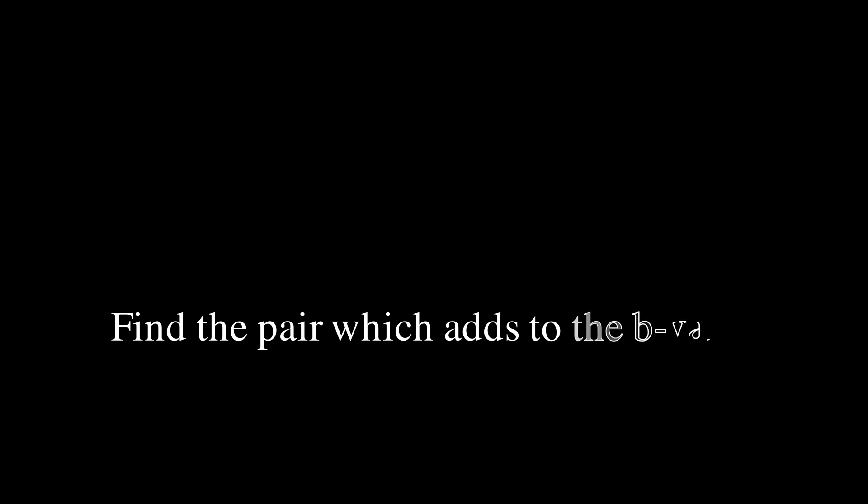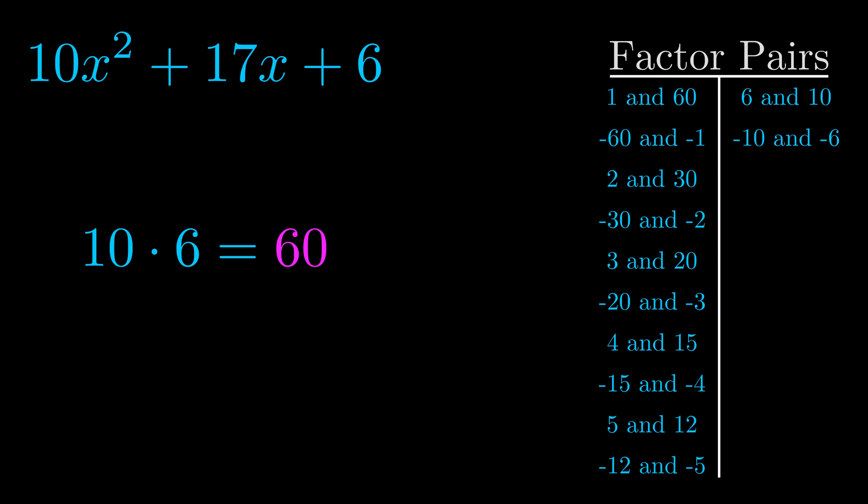The b value is the coefficient on the x term. That's the middle term, the one that we haven't done anything with yet. And really this is the only factor pair that we need.